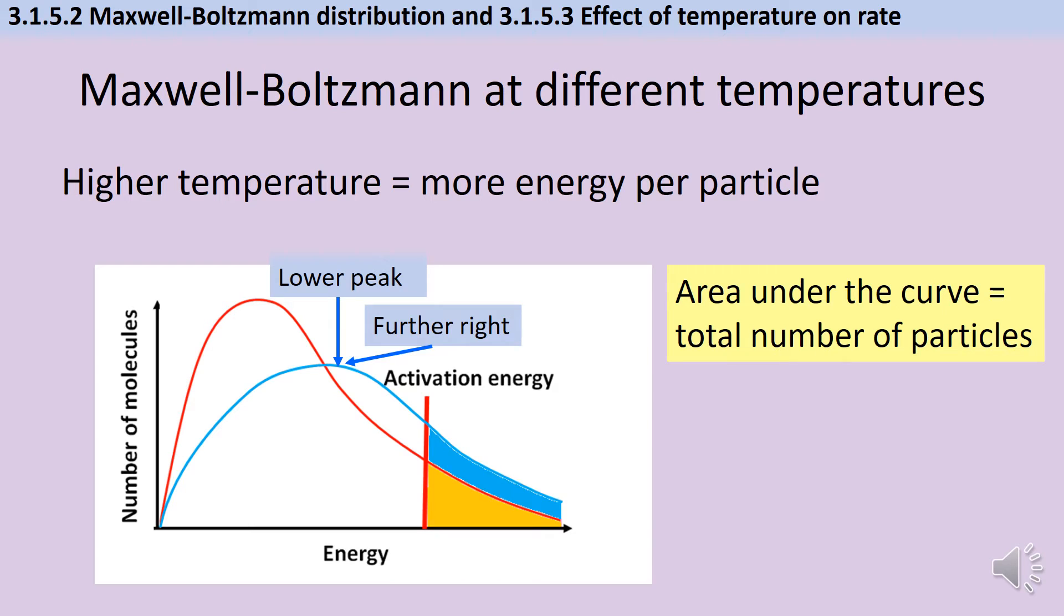The second thing is that it is skewed to the right so your peak is going to be further right than your original most probable energy was. The third thing you notice is that when the graph starts to flatten off it's going to remain higher so the two curves will only cross each other in one place.